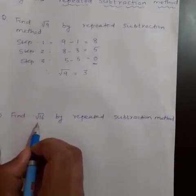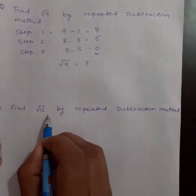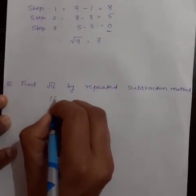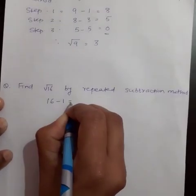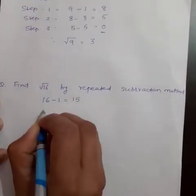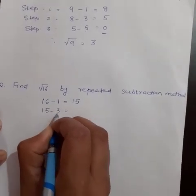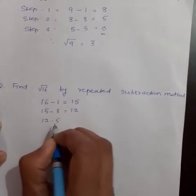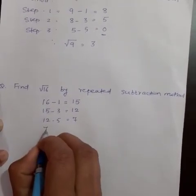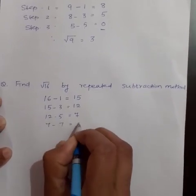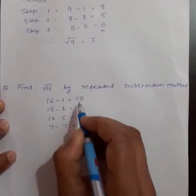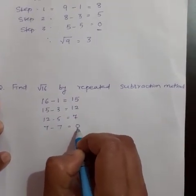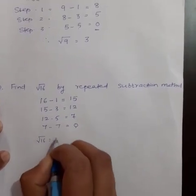Let us solve another sum. Find √16 by repeated subtraction method. In step 1, we subtract 1 from 16, that is equal to 15. Next, 15 minus 3, the next odd number, equals 12. 12 minus 5, the next odd number, equals 7. 7 minus 7, the next odd number, equals 0. So in step 4 we obtained 0. Therefore, square root of 16 is equal to 4. I hope you understood how to find the square root of a number by repeated subtraction method.